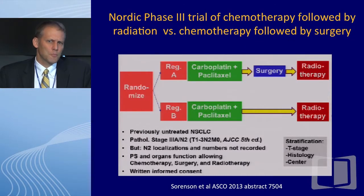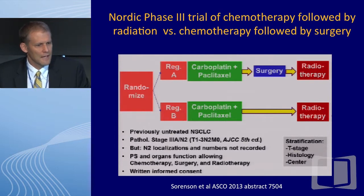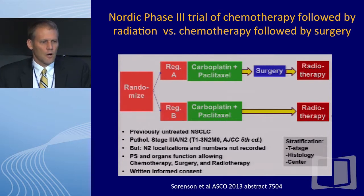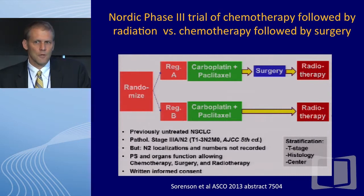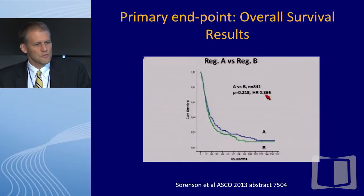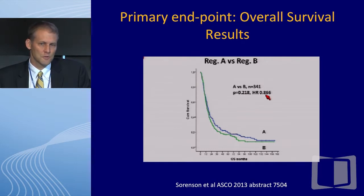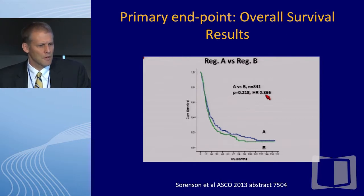The question comes up: maybe preoperative chemotherapy followed by surgery would be better than chemo-radiation. This trial presented at ASCO compared arm A — carboplatin and paclitaxel for three cycles, followed by surgery, followed by postoperative radiation — versus arm B — carboplatin and paclitaxel followed by radiation therapy. Arm B would be considered inferior therapy; most of us use concurrent chemo-radiotherapy. This trial showed no benefit to preoperative chemo followed by surgery over the sequential chemo-radiation paradigm.